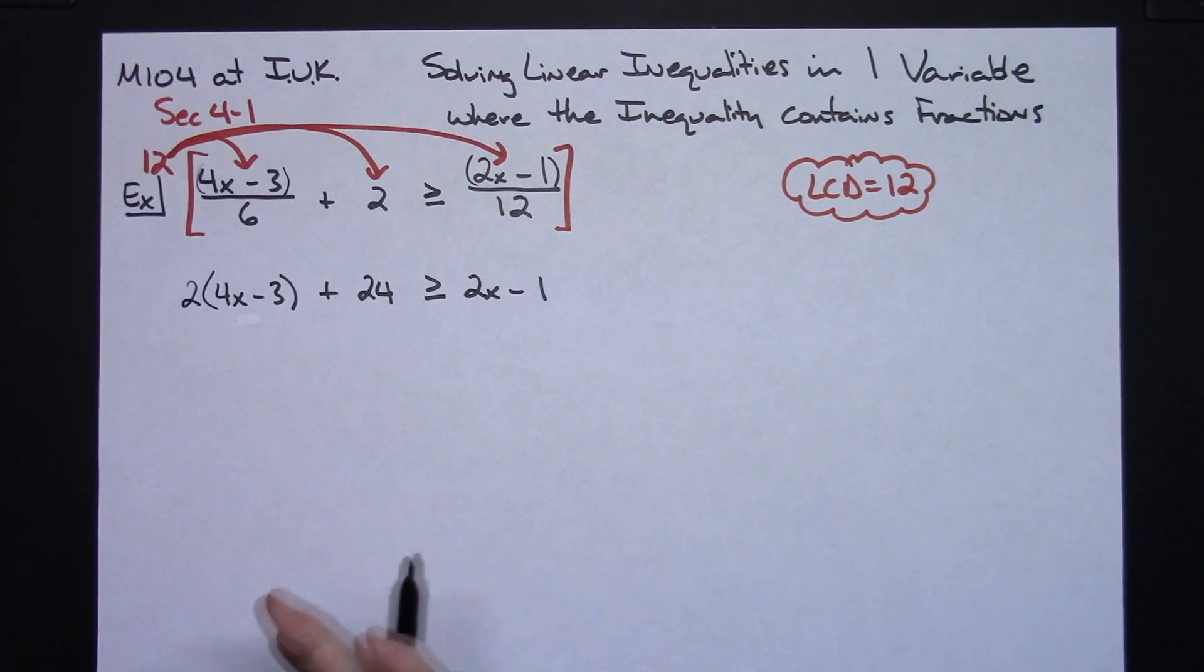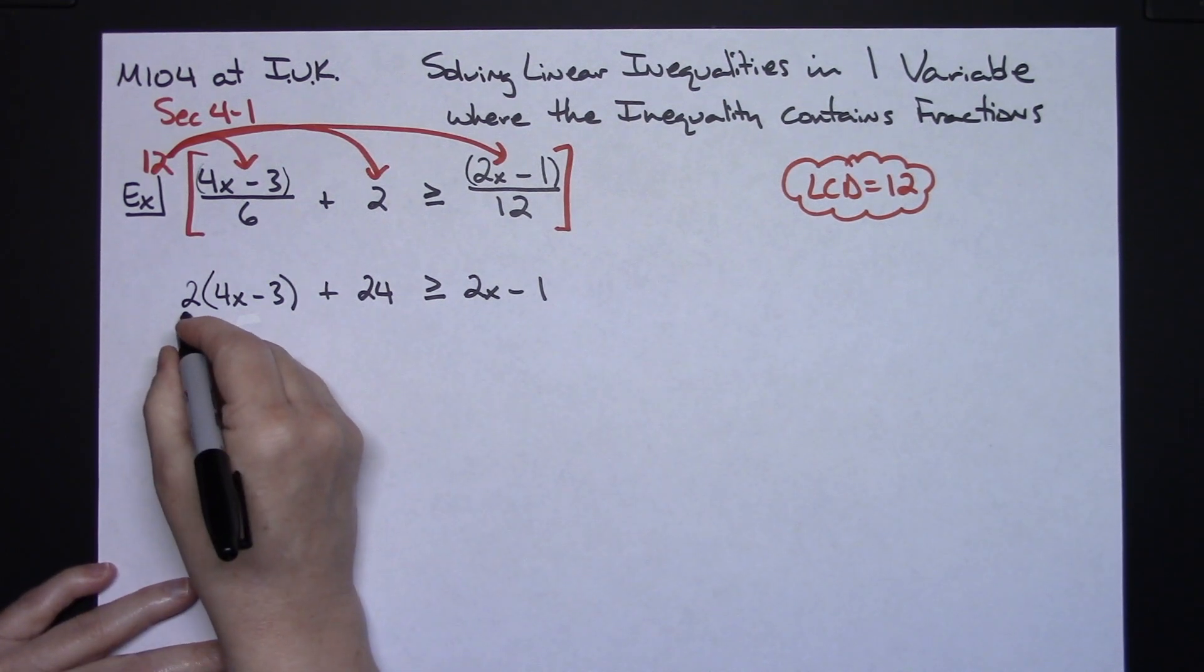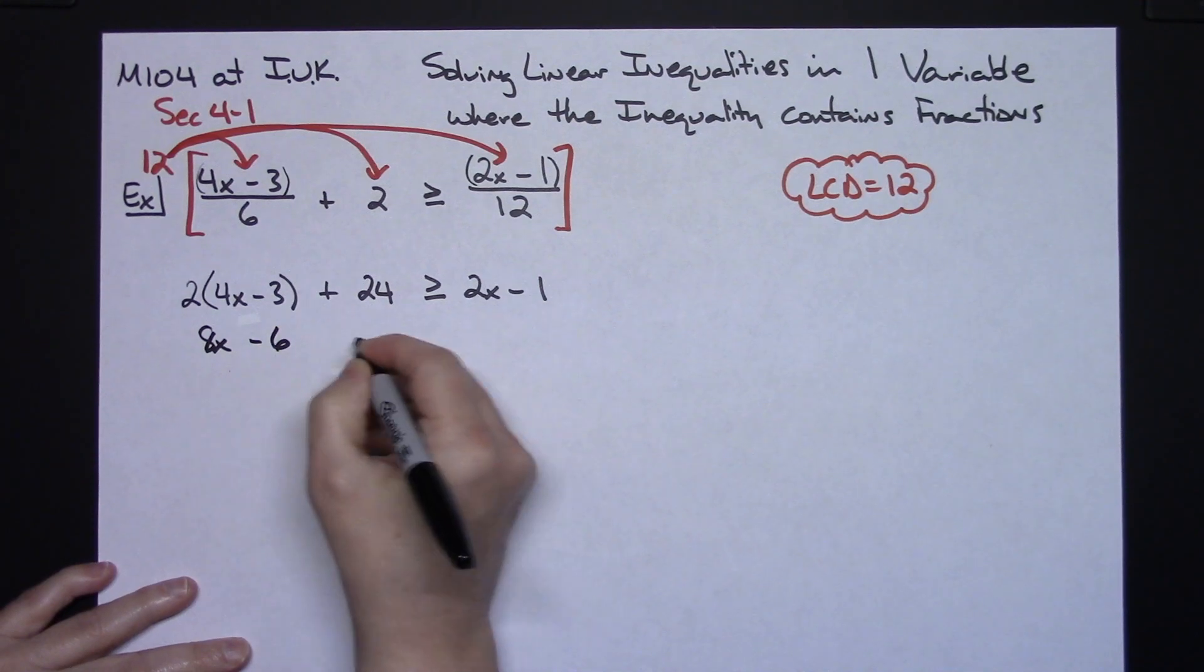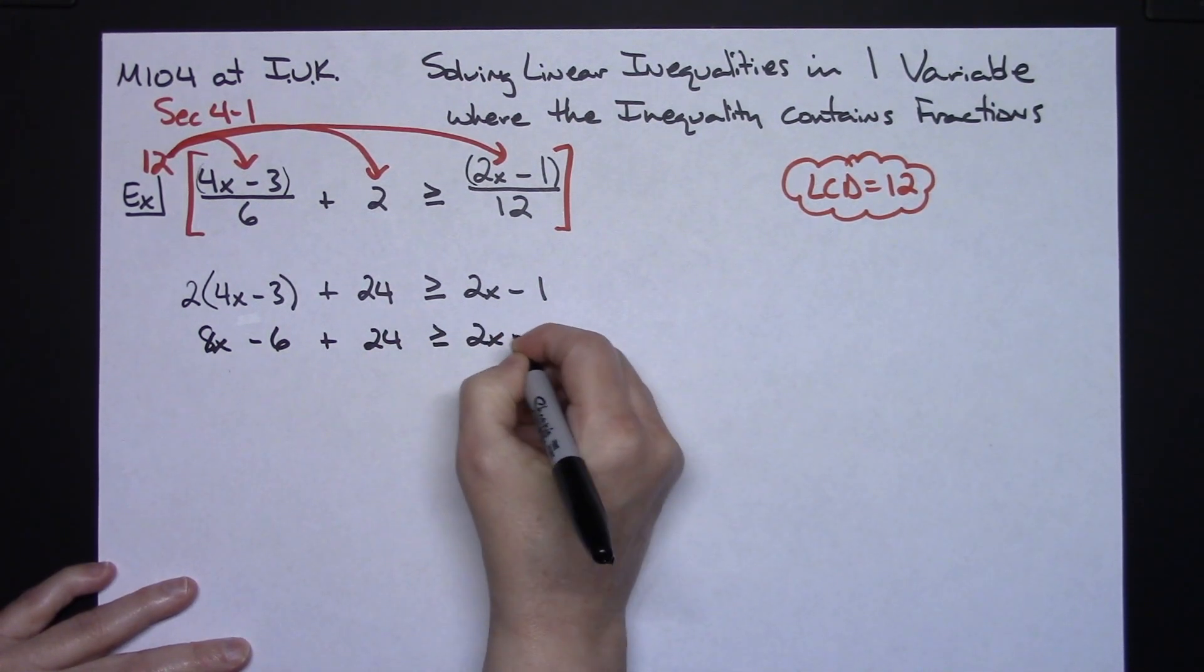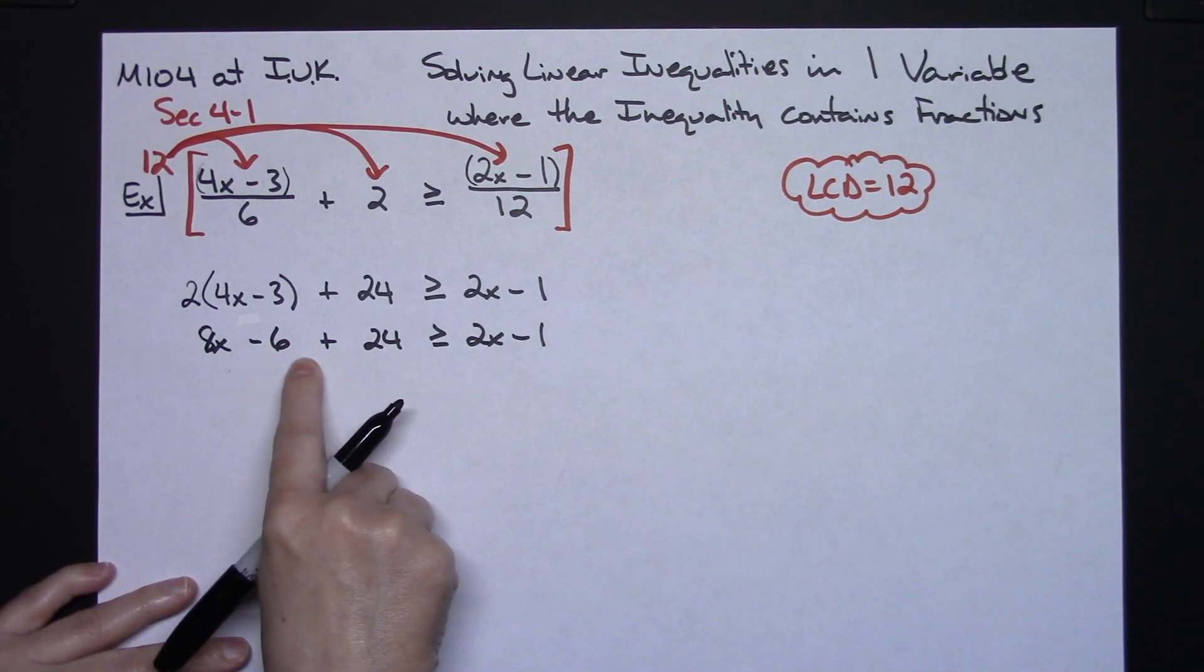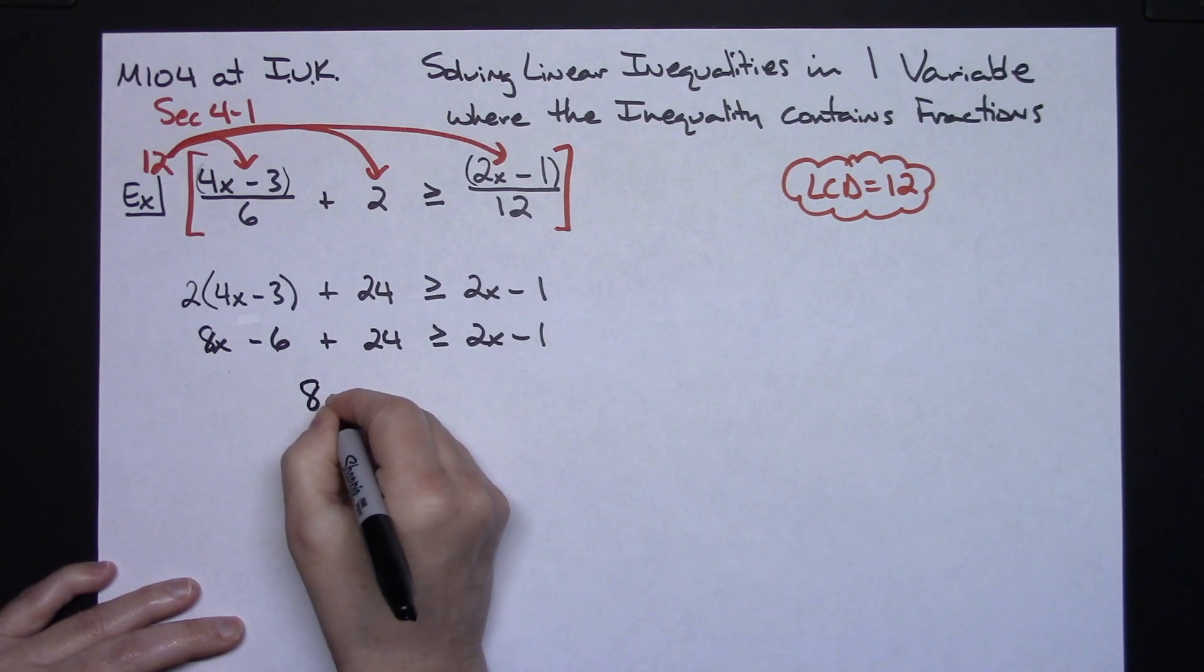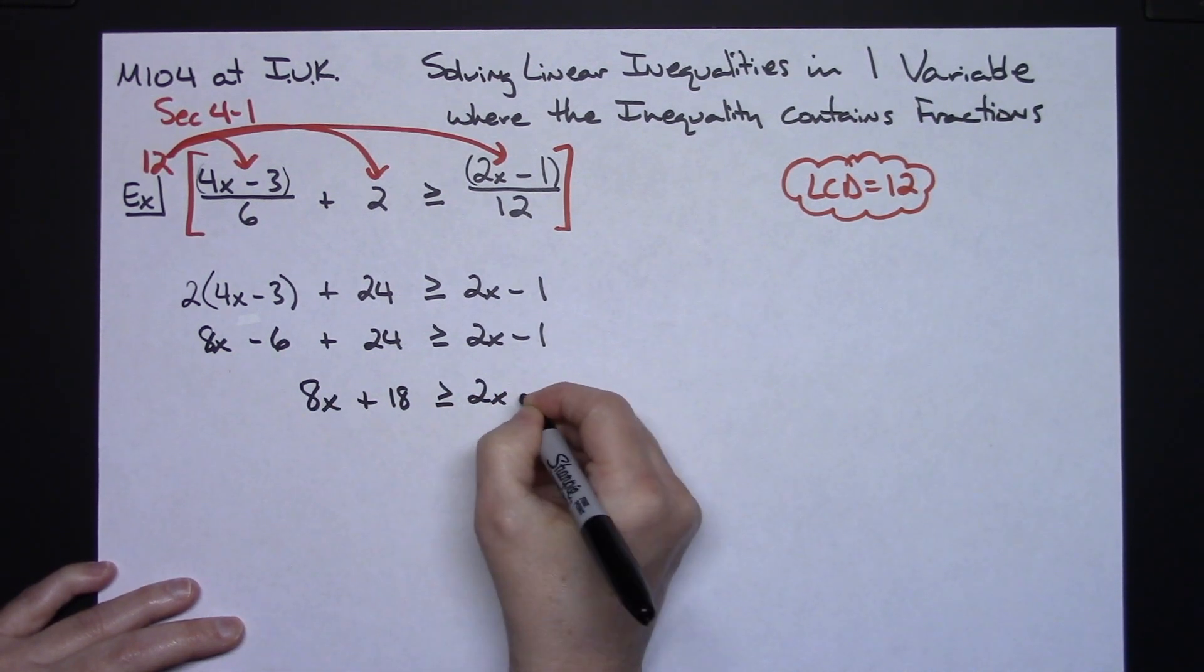And then now this turns this into just your standard inequality that we've been solving in this section. So let's go ahead and finish this out. 2 times the 4 there is going to give me an 8x minus 6 plus the 24 greater than or equal to 2x minus 1. Let's combine some like terms here. It's a negative 6 plus 24. That'll give me an 18. So 8x plus 18 greater than or equal to 2x minus 1.